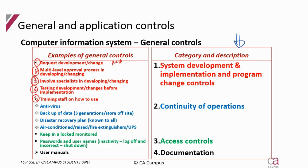Sometimes a general control question will focus on just system development or program change. It's important to apply your standard key controls to the process: you need good source document design, authorization, and a reconciliation in the form of testing to ensure it works as intended. There also needs to be segregation of duties — developers must be different from the users who are going to use the system.